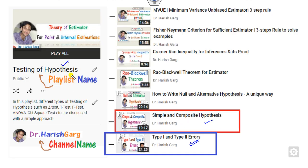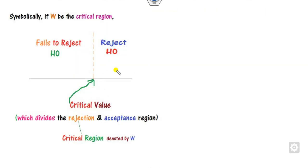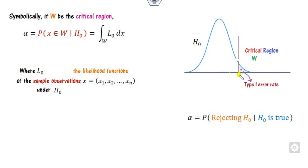You can watch the critical region, level of significance, and power of the test in the two videos available in the playlist 'Testing of Hypothesis' on the channel Dr. Harish Gargi. To quickly recall: any region which divides the rejection and accepted region is defined by the critical value, and the corresponding region is called the critical region, denoted by W. The portion lying in the critical part is the Type I error — rejecting H0 when H0 is true — written as the probability that X lies in the critical region given H0 is true, expressed as an integral of the likelihood function.